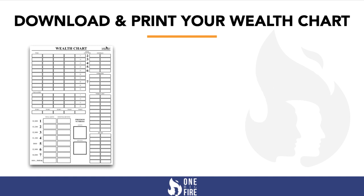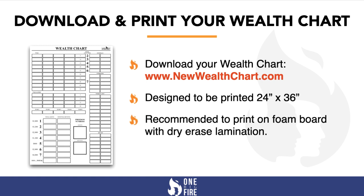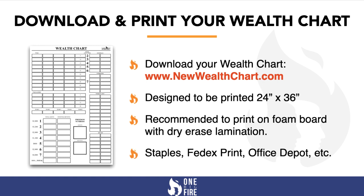First things first, let's download and print your wealth chart. You can go to newwealthchart.com and get a printable version. It's designed to be printed on 24 inches by 36 inches. We recommend printing it on a foam board with a dry erase lamination finish. You can do this at Staples, FedEx Print, Office Depot, etc.